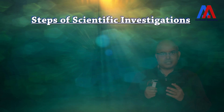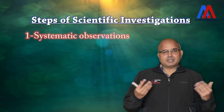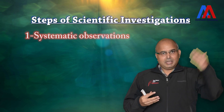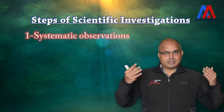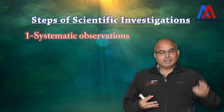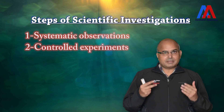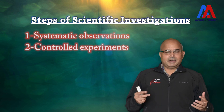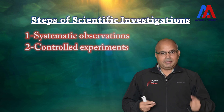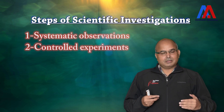What are the different steps of scientific investigation? The first important step is systematic observation — we observe something and draw conclusions. For example, all apples drop from a tree; no apple goes upward. The second step is the controlled experiment: find out how much time the apple takes to drop, which can be done by anybody anywhere in the world. You note the time and find how long it takes to fall a given height.